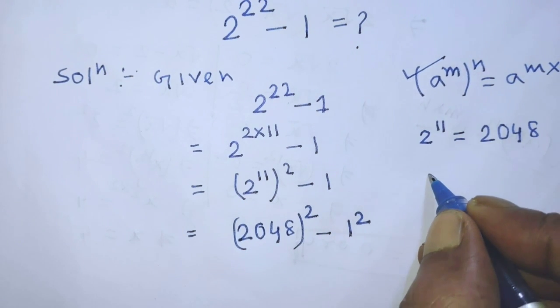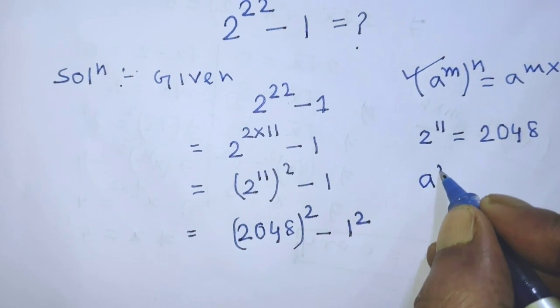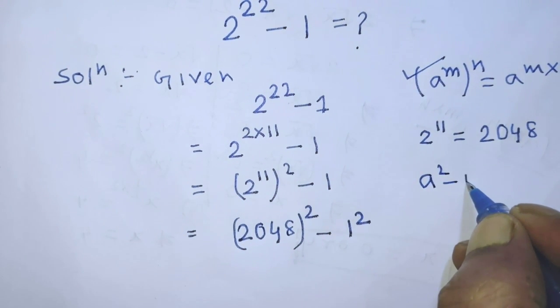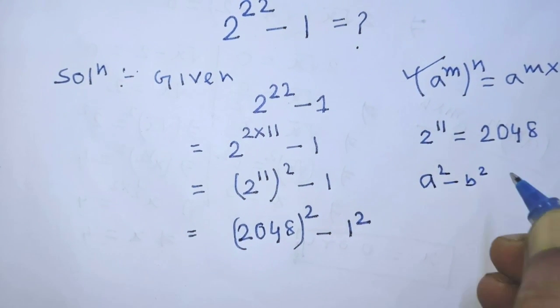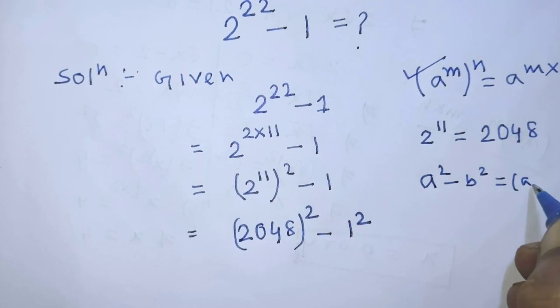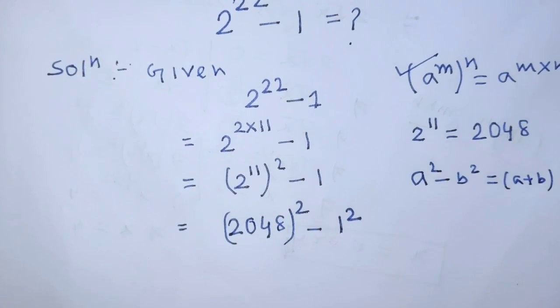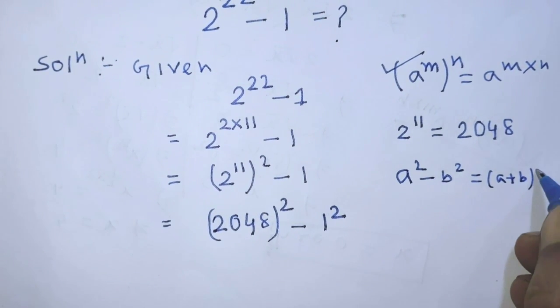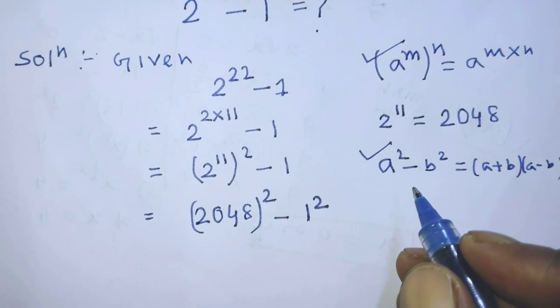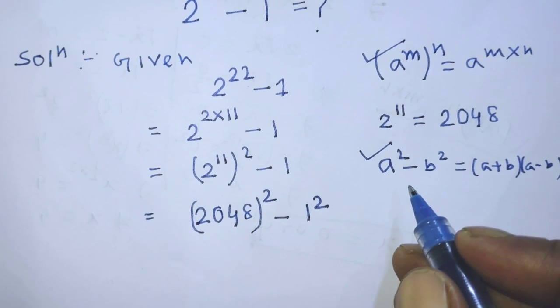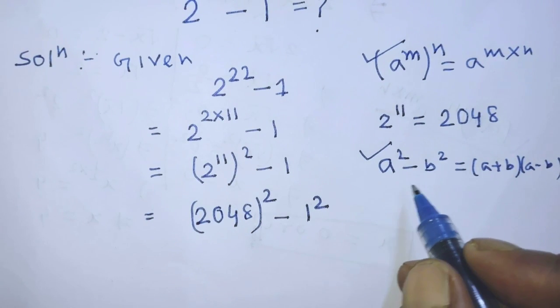To simplify this algebraic expression, we have to apply the formula: a squared minus b squared is equal to a plus b times a minus b.